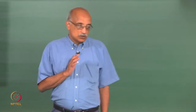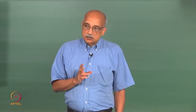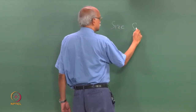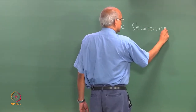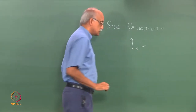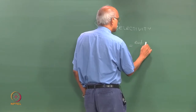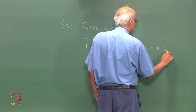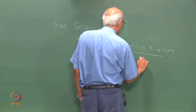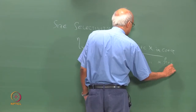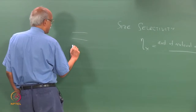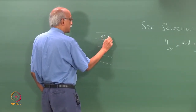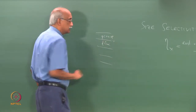One of the parameters used to describe the operation of a ball mill is something called size selectivity, which is the ratio of the amount of material of size x in the coarse stream to the amount of material of size x in the feed. When we talk about fine and coarse, what we are referring to is a set of screens — if you set one of these as your reference screen, then anything larger than this would be called the coarse fraction and anything smaller would be the fine fraction.